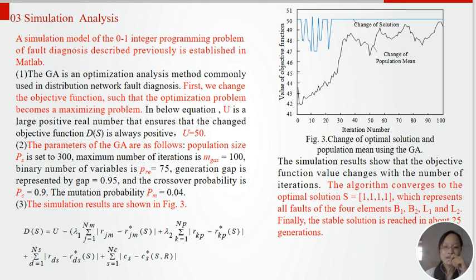The parameters of the GA are as follows. The simulation results are shown in Figure 3. The algorithm converges to the optimal situation S equal to [1,1,1,1], which represents faults of the four elements: buses 1, buses 2, line 1, and line 2. Finally, the stable situation is reached after 25 generations.